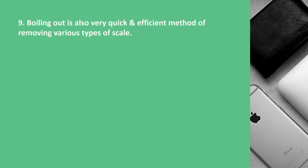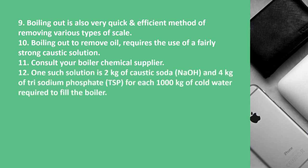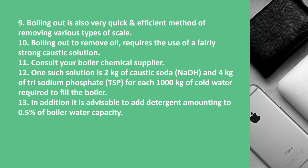Boiling out is also a very quick and efficient method of removing various types of scale. Boiling out to remove oil requires the use of a fairly strong caustic solution — consult your boiler chemical supplier and maker's advice. One such solution is 2 kg of caustic soda and 4 kg of dry sodium phosphate for each 1000 kg of cold water required to fill the boiler. In addition, it is advisable to add a detergent amounting to 0.5 percent of the boiler water capacity.